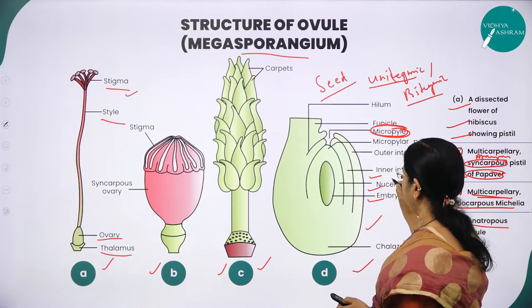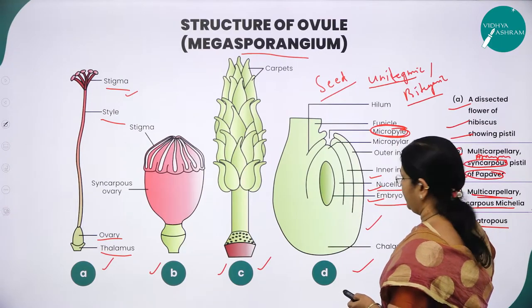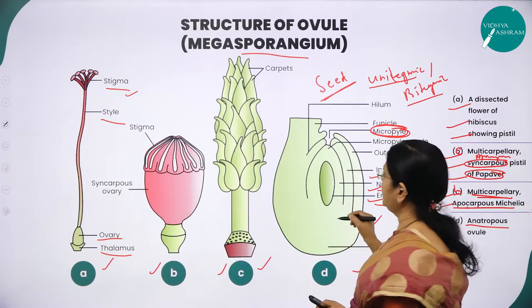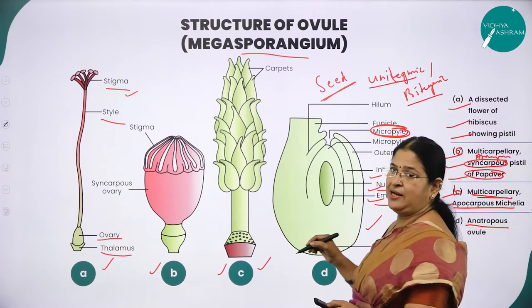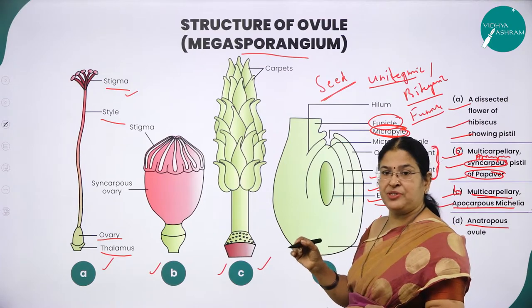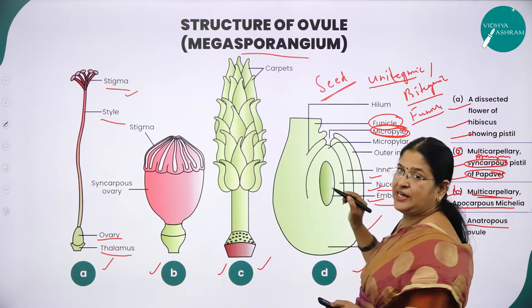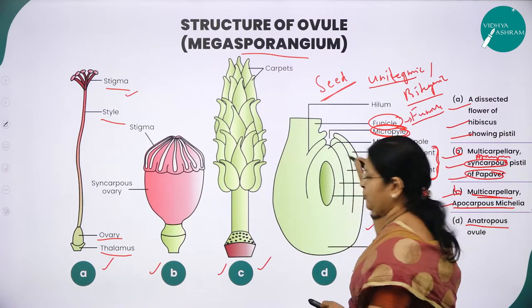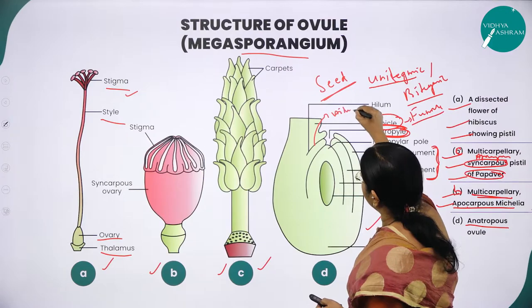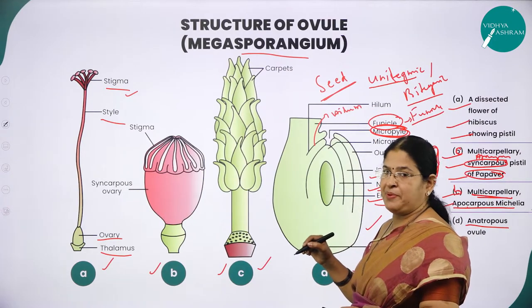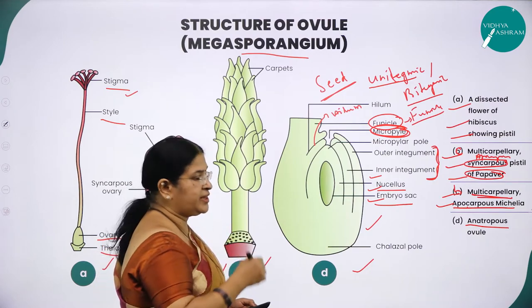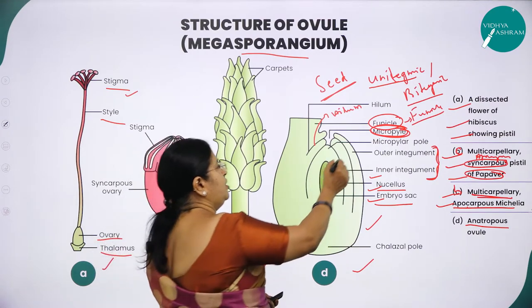The body of the ovule fuses with the funicle at a particular region called the hilum. The ovule consists of two envelopes called integuments — outer integument and inner integument. These integuments encircle the whole ovule except at the tip, where you find a small opening called the micropyle. Opposite to the micropyle is the chalazal region, which forms the base of the ovule.